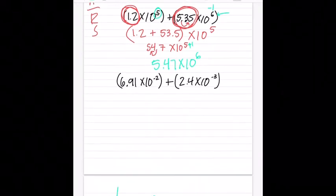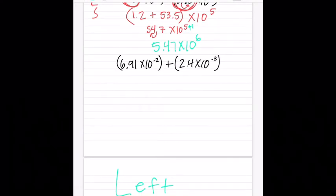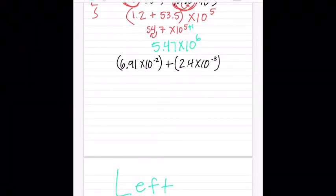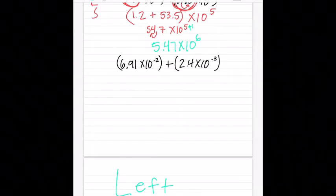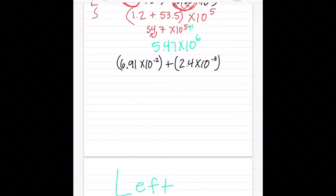The negative exponents are a little tricky. It's basic math when you're changing the exponent, so if you don't trust yourself put it in the calculator — there's no judgment. Sometimes you have brain farts, use the calculator, it's your friend. This is addition, so I need to make my exponents the same. Right now I have negative two and negative three.